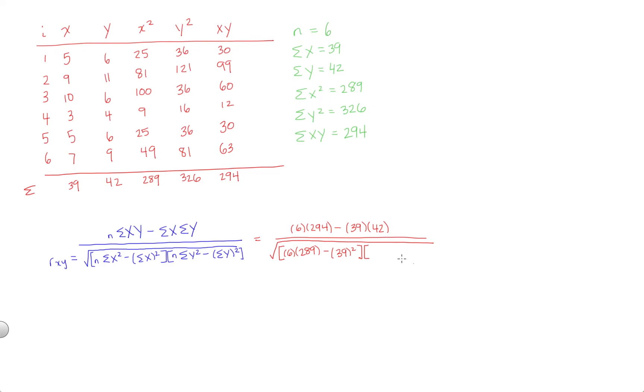And now we're going to do the same for y. We have 6 times sigma y squared, 326, minus sigma y, again, squared. So we're going to put 42 squared here.